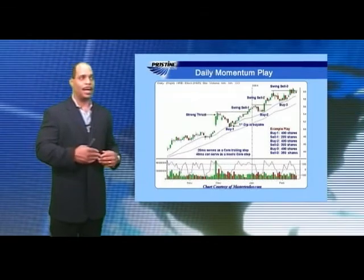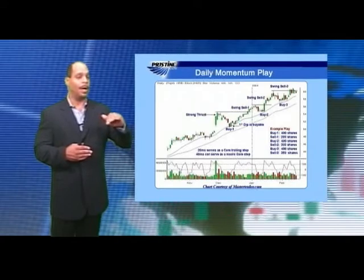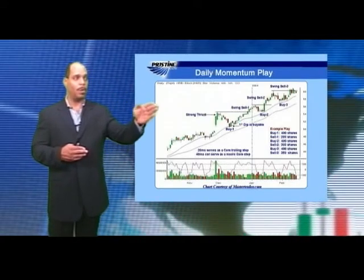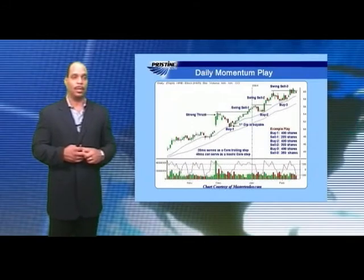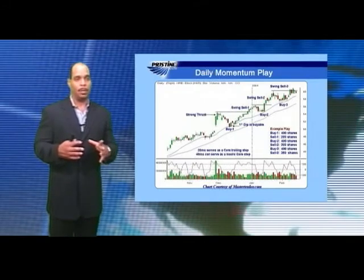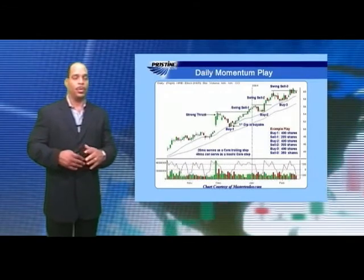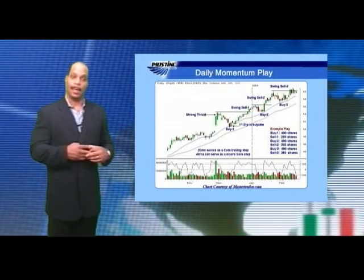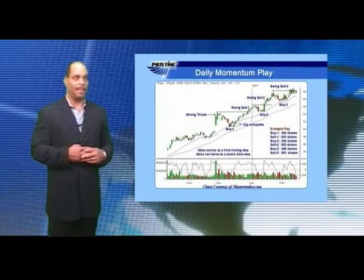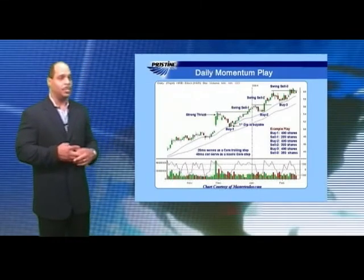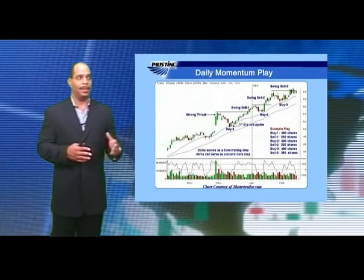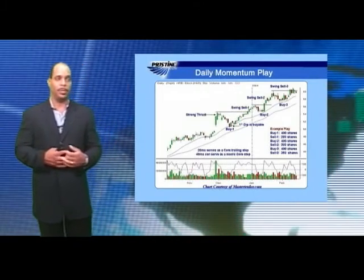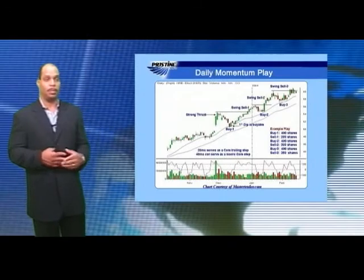Once the stock has rallied and superseded the high of the last rally, note where swing sell number one is marked. At swing sell number one, you're going to sell one half of your position. The other half is held in the core fashion. Then you simply wait to enter again. The next pullback — a three to five bar decline right back to the 20 period moving average — gives us buy opportunity number two.